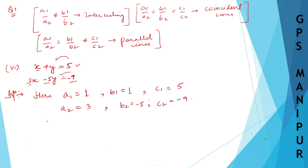Therefore, a1 by a2 equals 1 divided by 3. B1 divided by b2 equals 1 divided by minus 5, so minus 1 by 5. And c1 by c2 equals 5 divided by minus 9, so minus 5 by 9.